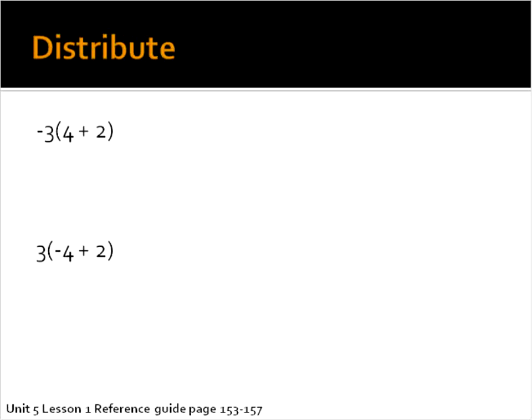The Distributive Property is basically this in a nutshell. When you have something like this negative 3, for example, on the outside of the parentheses, you have to distribute that number to each term inside of the parentheses. In other words, you need to multiply negative 3 times 4 and you have to multiply negative 3 times 2.